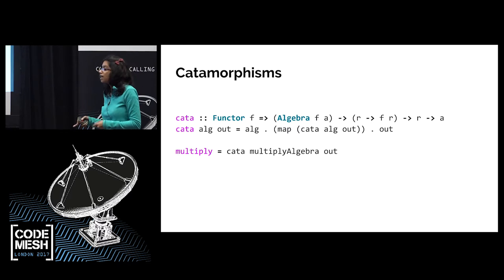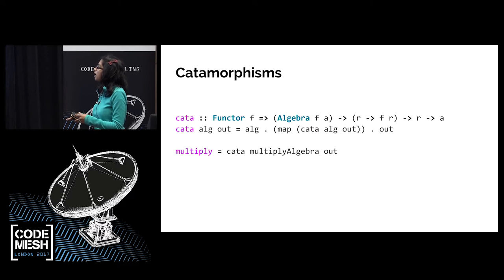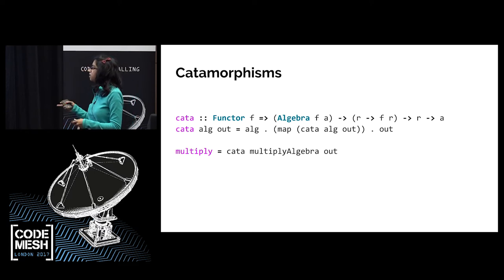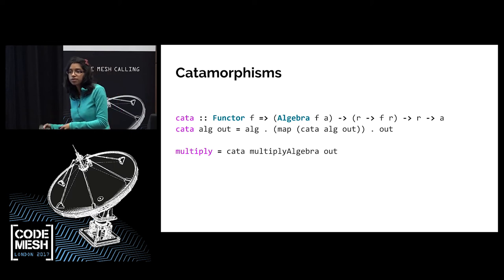We can write this as: `out`, then `map cata`, then `alg`. And this translates really well to Haskell. I've got a function `cata` — provided that F is a functor, I can take in an algebra and the `out` of my isomorphism, and return a function that goes from R to A. If I take my `multiplyAlgebra` and the `out` I defined for ListF and put those together, I actually get the multiply function I started out with — a recursive collapse.